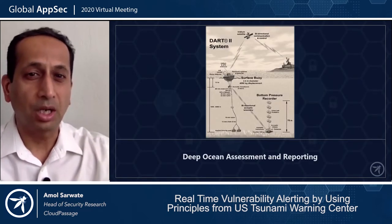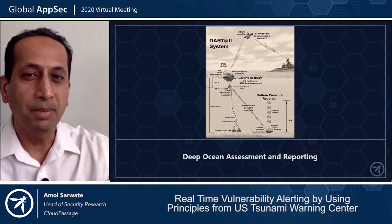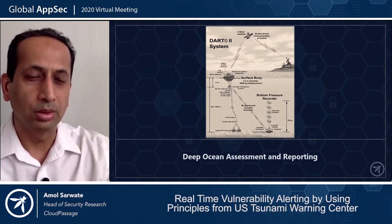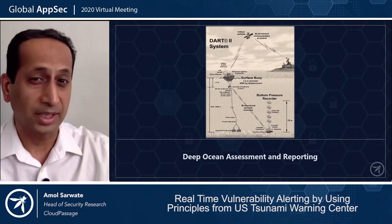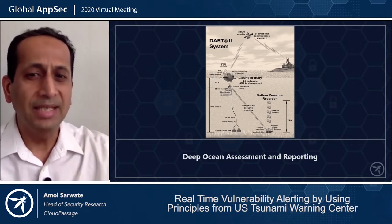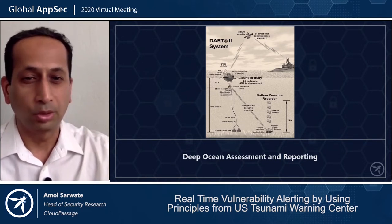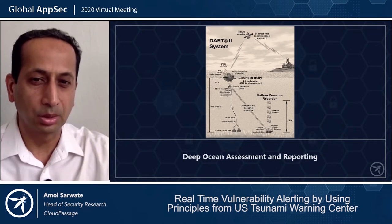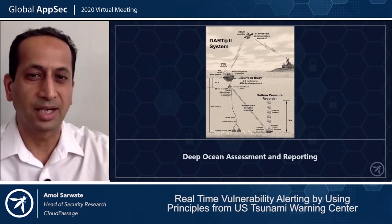This is a typical DART system — a Deep Ocean Assessment and Reporting system — used by the Tsunami Tracking Center. It's made of three main components. There are sensors glued or attached to the ocean floor, held down by anchors. These sensors record even minor tremors, earthquakes, and volcanic eruptions — anything with the potential to cause a tsunami. There are many such sensors at the ocean floor, and they talk to surface buoys through acoustic telemetry and other communication mechanisms, constantly providing data on seismic activity.